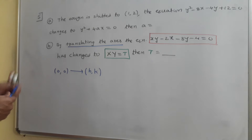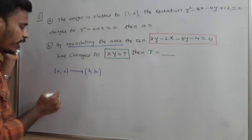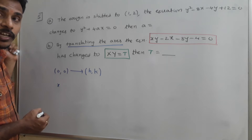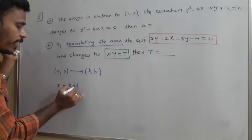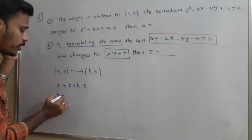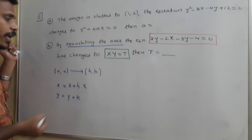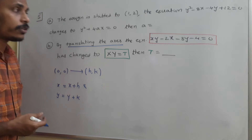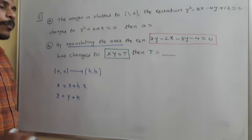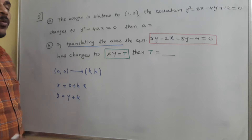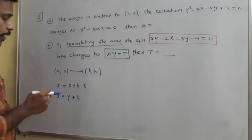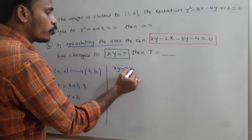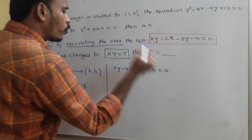Since the origin is shifted to h, k, we have a relation between the old coordinates and the new coordinates. The old coordinates: small x equals capital X plus h, and small y equals capital Y plus k, as we discussed in the last class. Since this is the old equation, to convert it into the new equation, we need to replace small x with capital X plus h and small y with capital Y plus k. So the given equation xy minus 2x minus 3y minus 4 equals 0 becomes the new equation.